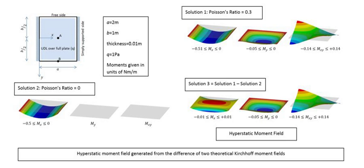The stresses in a structure can be determined by making a model of the structure from a photoelastic material. Dynamic mechanical analysis is a technique used to study and characterize viscoelastic materials, particularly polymers. A sinusoidal force is applied to the material and the resulting displacement is measured. For a perfectly elastic solid, the resulting strains and stresses will be perfectly in phase. For a purely viscous fluid, there will be a 90-degree phase lag of strain with respect to stress. Viscoelastic polymers have characteristics in between, where some phase lag will occur during DMA tests.